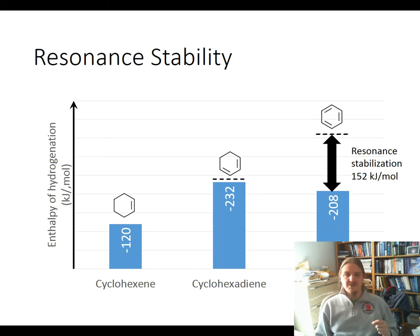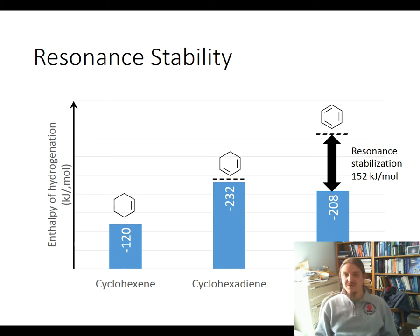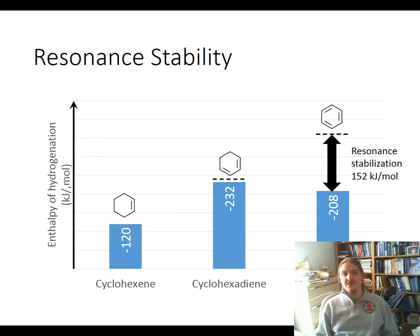Benzene is 152 kilojoules per mole more stable than would otherwise be expected, and this is what leads to its unusual reactivity, which will be the subject of another video series later.